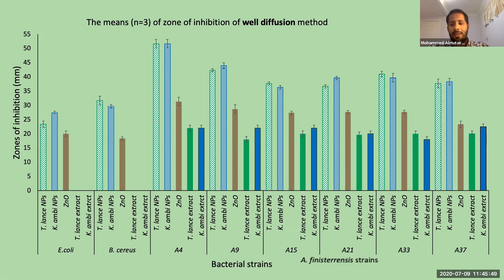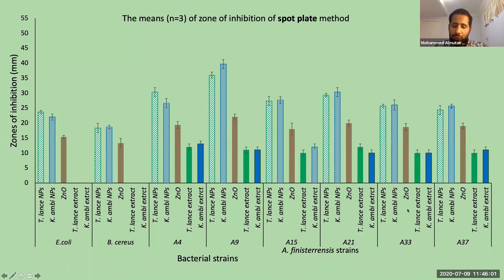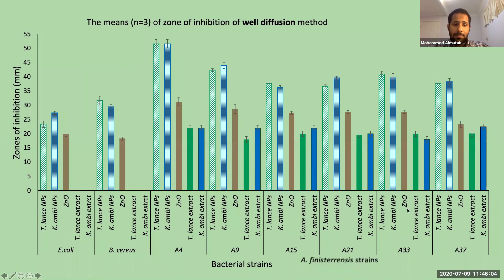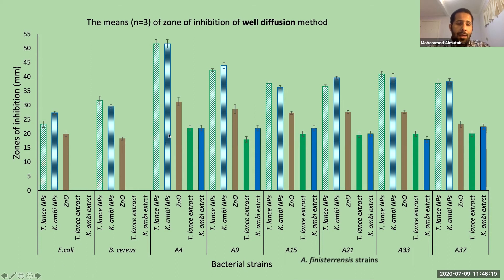The green synthesized zinc oxide nanoparticles showed zones of inhibition against all tested bacteria, and the highest mean zones of inhibition were against Aliivibrio strains, especially A4, while the lowest zone of inhibition was against E. coli. The nanoparticles are shown in this color, the green synthesized ones in this color, and the blue represents the plant extract.